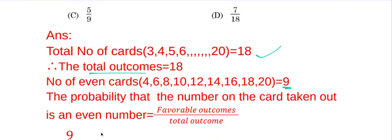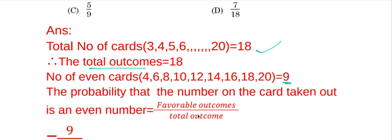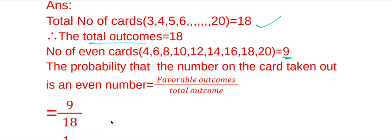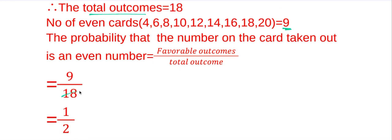The probability that the number on the card taken out is an even number equals favorable outcomes divided by total outcomes. Favorable outcomes (even cards) = 9, and total outcomes = 18. So 9 divided by 18 simplifies to 1/2.